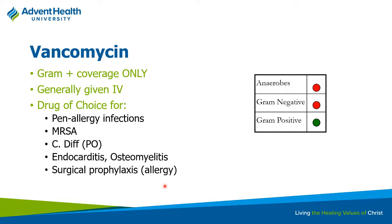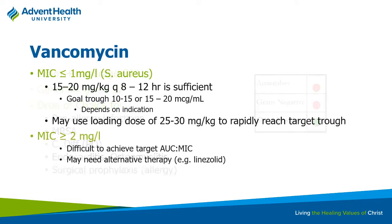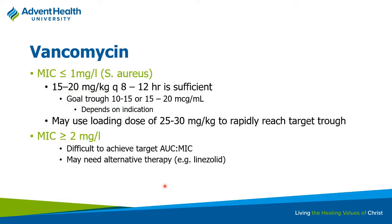Most of the time you'll see IV vancomycin because it has poor bioavailability orally. This is one drug we use therapeutic drug monitoring on due to its narrow therapeutic index — unlike most other antibiotics where you just adjust for renal function. We check levels frequently to ensure the patient isn't accumulating drug and causing toxicity, and more importantly to confirm we're achieving concentrations sufficient to kill the bacteria.